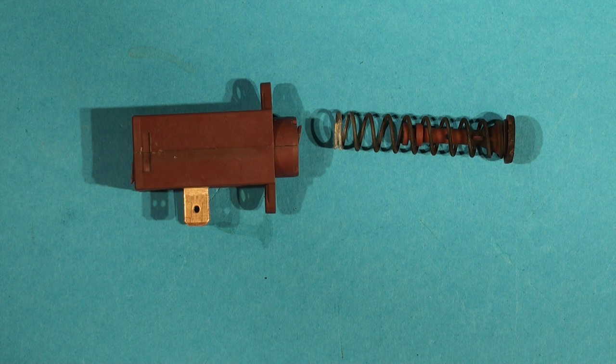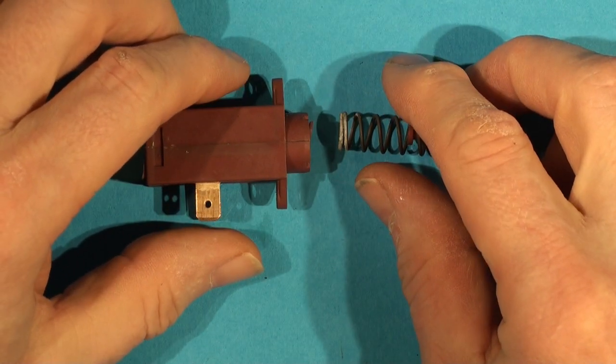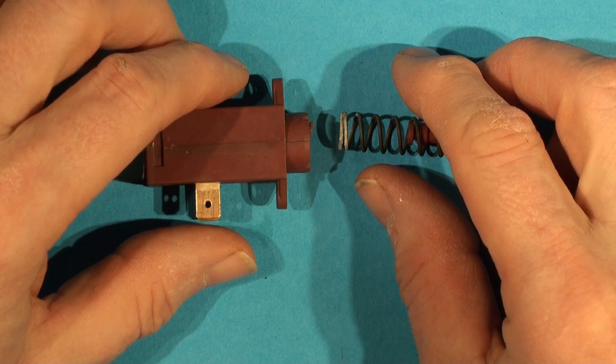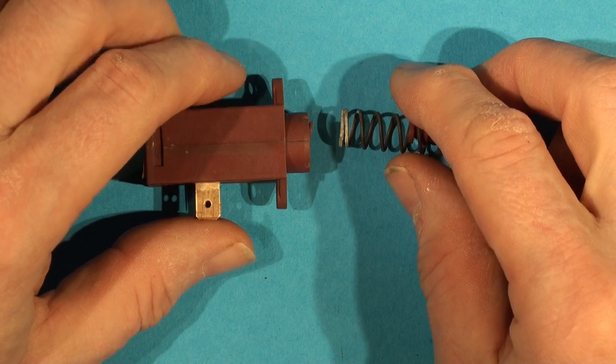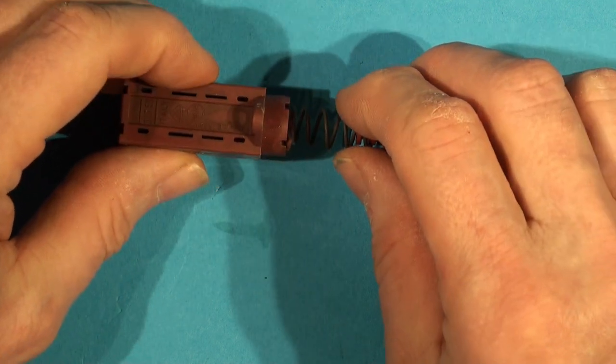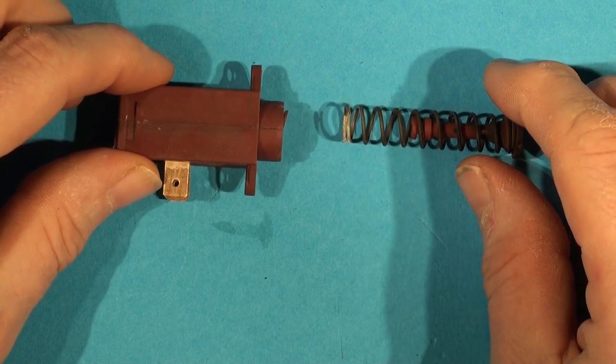If your dishwasher blows the fuse five or six minutes into the cycle on a normal Econo wash where you haven't got a pre-rinse, then it's probably this thing causing your problem. There's not much about this on the internet so I thought I'd show it to you because it's quite an interesting thing.